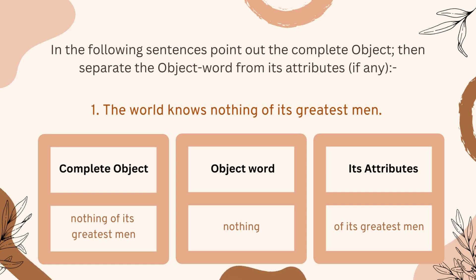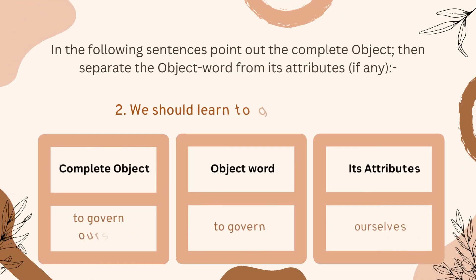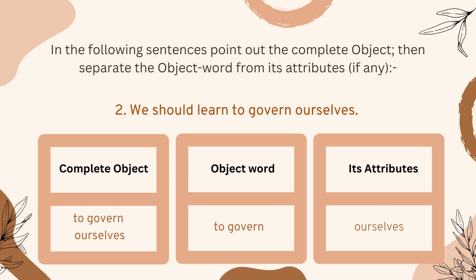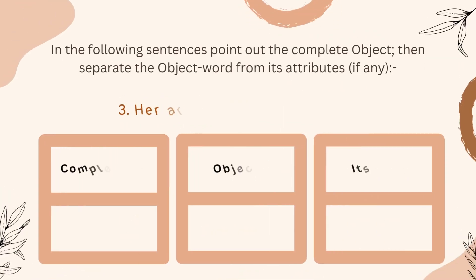Number two: 'We should learn to govern ourselves.' Here, 'to govern ourselves' is the complete object. 'To govern' is the object word, and 'ourselves' — only one word — is used as an attribute of this word.